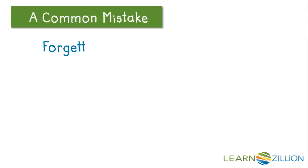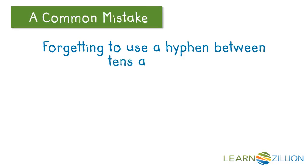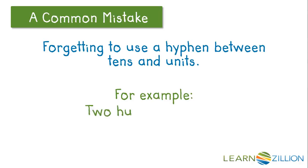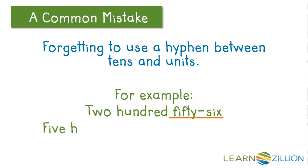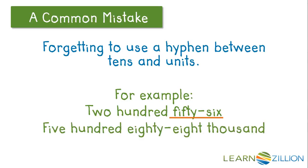A common mistake many students make is forgetting to use a hyphen between tens and units when writing numbers. For example, 256 contains a hyphen between the fifty and six, and 588,000 contains a hyphen between the eighty and eight.